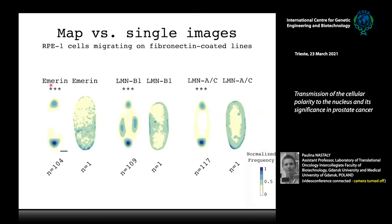Here I show three nuclear envelope proteins. This is a single image of emerin in a single cell, and here is its distribution map. It was really clear from single cells that in front-rear polarized cells there is enrichment of emerin at the front of the cell, nicely expressed in the frequency distribution map. For lamin B and lamin AC, single images also show that these two proteins were enriched at the front edge of the nucleus.